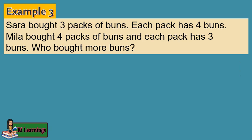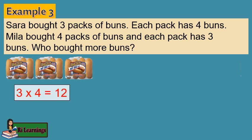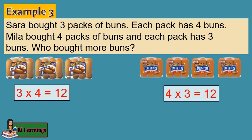Let's try this word problem. Sarah bought 3 packs of buns, each pack has 4 buns. Mila bought 4 packs of buns and each pack has 3 buns. Who bought more buns? Sarah: 3 times 4 equals 12. Mila: 4 times 3 equals 12. Both Sarah and Mila bought 12 buns. The answer is the same even after changing the order of the numbers. Thus, the multiplication is commutative.